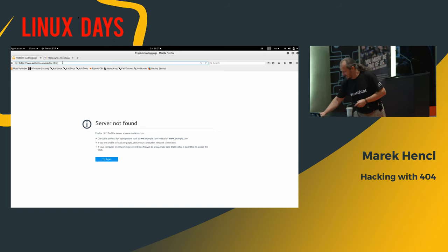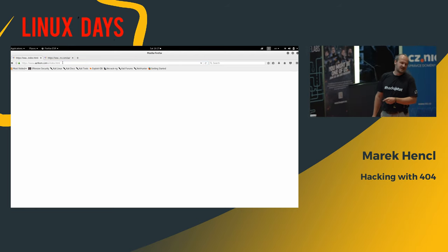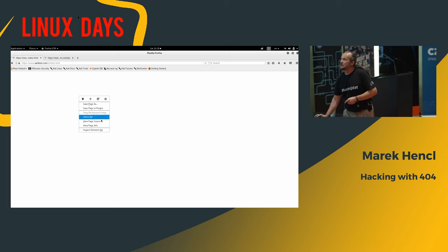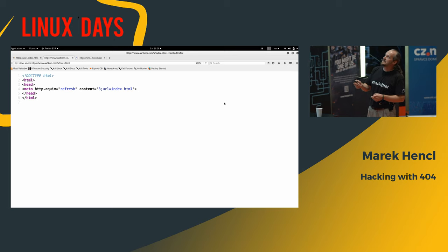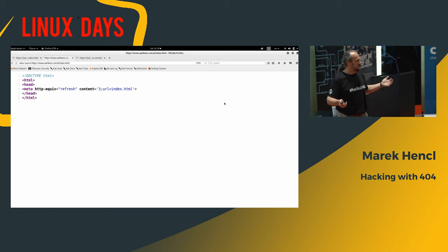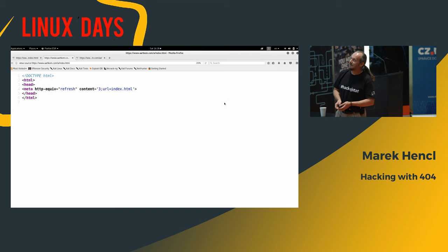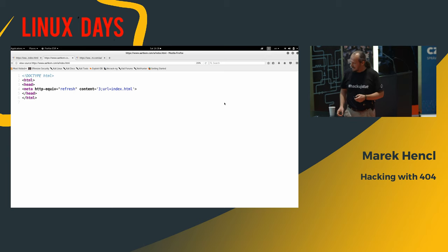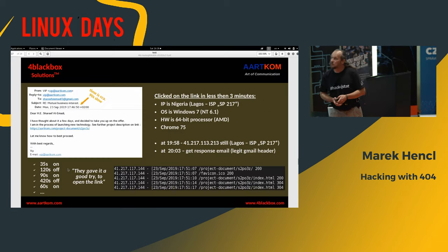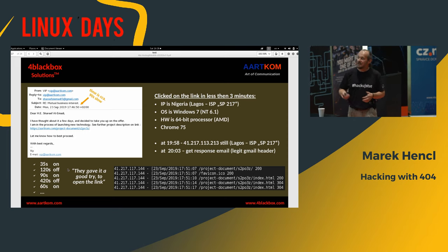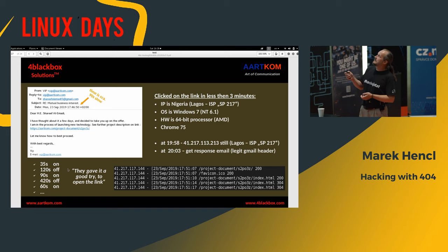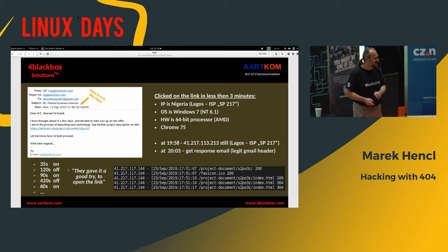I prepared a link that basically doesn't do anything — if you press it, it's just a white screen. Looking at the source code, it's just a simple redirect, redirecting to itself every three seconds. This gives me a time frame of how long they are on the link, and I get the metadata back to see where they're coming from. I prepared a little social engineering and thought, are they going to respond? It took me 10 days to respond — but then it took them only three minutes to click the link. They're coming from Nigeria, looks like Windows 7, 64-bit AMD, relatively up-to-date browser, Chrome version 7.5.